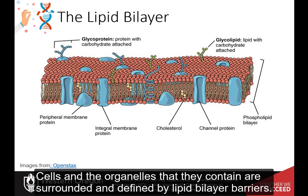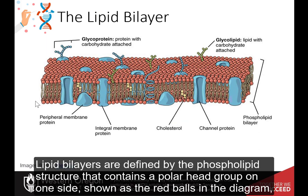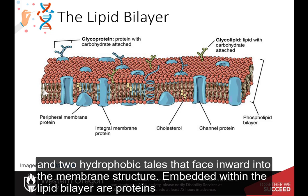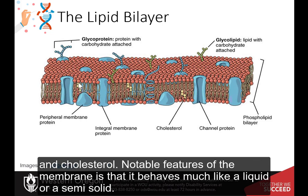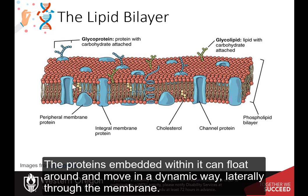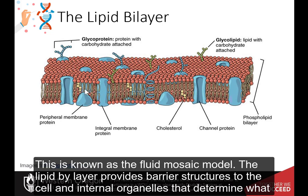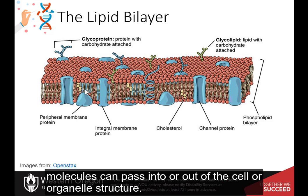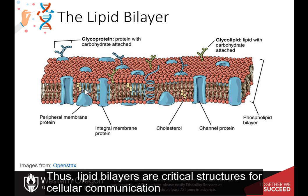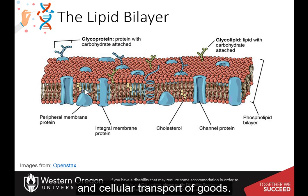Cells and the organelles that they contain are surrounded and defined by lipid bilayer barriers. Lipid bilayers are defined by the phospholipid structure that contains polar head groups on one side, shown as the red balls in the diagram, and two hydrophobic tails that face inward into the membrane structure. Embedded within the lipid bilayer are proteins and cholesterol. A notable feature of the membrane is that it behaves much like a liquid or a semi-solid. The proteins embedded within it can float around and move in a dynamic way laterally through the membrane. This is known as the fluid mosaic model. The lipid bilayer provides a barrier structure to the cell and internal organelles that determines what molecules can pass into or out of the cell or organelle structure. Thus, lipid bilayers are critical structures for cellular communication and cellular transport of goods.